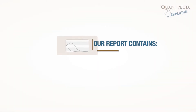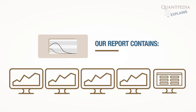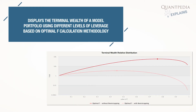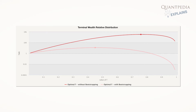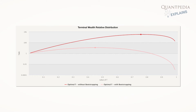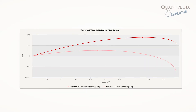Our report contains four charts and one table. The first chart displays the terminal wealth of a model portfolio using different levels of leverage based on the Optimal F calculation methodology. The chart displays two curves: one is calculated from past daily returns of the model portfolio, and the second curve is bootstrapped Optimal F, showing the conservative level of leverage that's not advised to exceed.